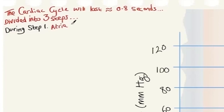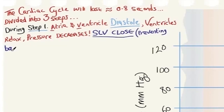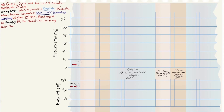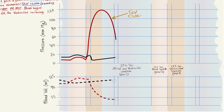During step one, atrial and ventricular diastole, the ventricles relax and pressure decreases. The semilunar valves close to prevent backflow, and the atrioventricular valves open. Blood begins to passively fill the ventricles, increasing their volume. On the graph, as ventricular pressure reaches its peak, step one begins, pressure starts to decrease, the semilunar valve closes, and as pressure decreases further, the atrioventricular valve opens.